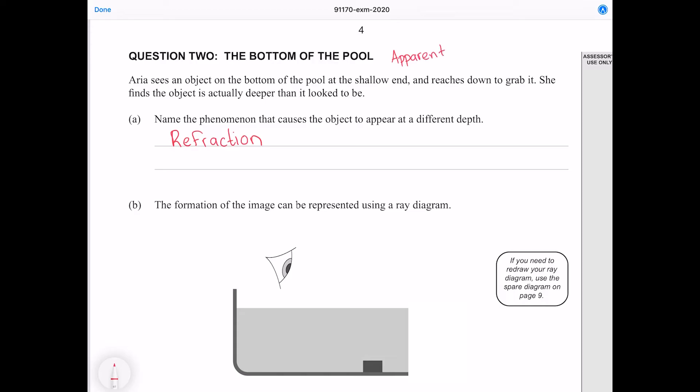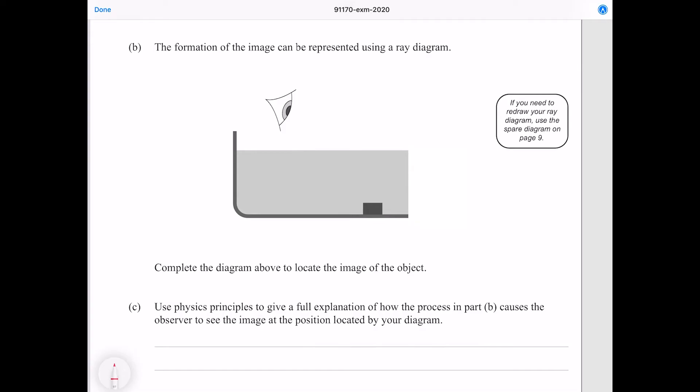The formation of the image can be represented using a ray diagram. Complete the diagram above to locate the image of the object. So doing these particular kinds of ray diagrams is more arbitrary than we're used to doing in physics. Basically the idea is that we're going to have two rays coming off the object striking the boundary.